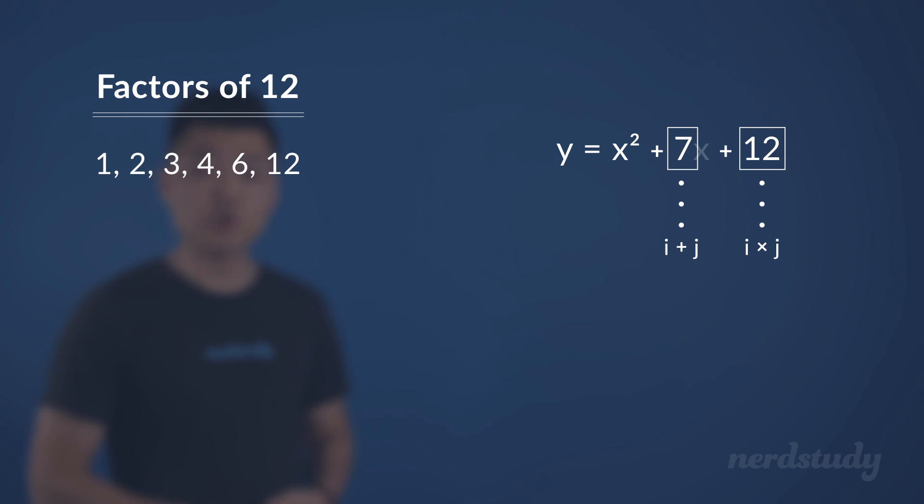Well, if we try 1 times 12, we get 12, which works, but when added together, it equals 13, not 7. So that combination is out the window. Also, if we added 1 and 6 together, we would get 7, which works for here, but when multiplied gives us 6. So that doesn't work either.